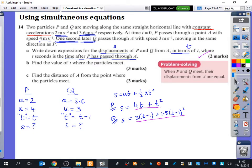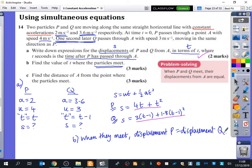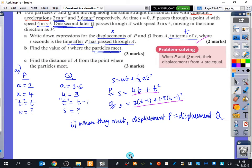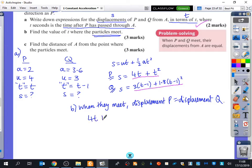It then says for part B of the question, find the values of T where the particles meet. When particles meet, what can you tell me about S, U, V, A, or T? The S's must be equal to each other because they have travelled the same distance or they have displaced the same amount. So I know that for part B, when they meet, displacement of P equals the displacement of Q. So I can go and I can actually make those two things I've underlined in purple, I can make them equal to each other. So I get 4T plus T squared equals 3(T minus 1) plus 1.8(T minus 1) squared.